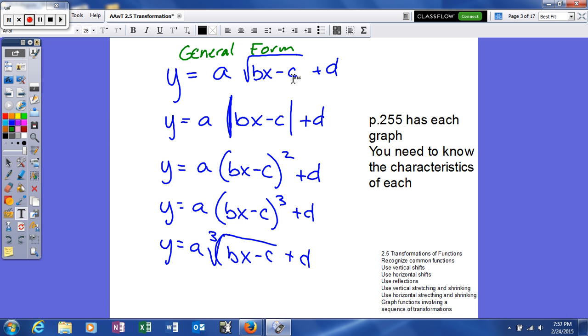C is the constant inside our parent function, and D is the constant on the outside. Keep that in mind. Look at page 255, because we're going to look at what A, B, C, and D do to these graphs, and then we'll extrapolate that to other graphs we're going to study later.